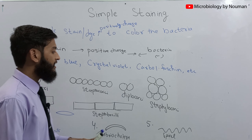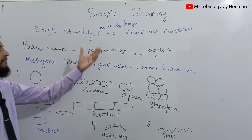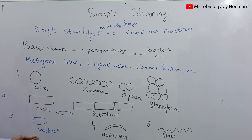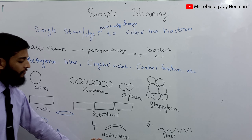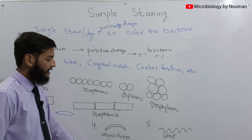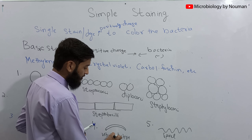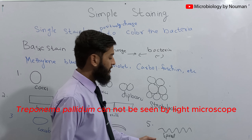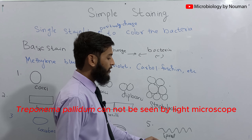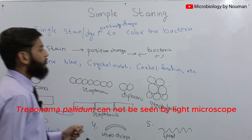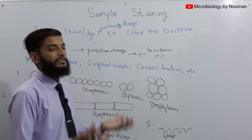So different shapes and arrangements of bacteria can be seen after simple staining: round-shaped bacteria known as cocci, rod-shaped bacteria known as bacilli, intermediate forms called coccobacilli, comma-shaped bacteria such as Vibrio cholerae which causes cholera, and spiral or helical-shaped bacteria such as Treponema pallidum. Now we will talk about the procedure for performing simple staining.